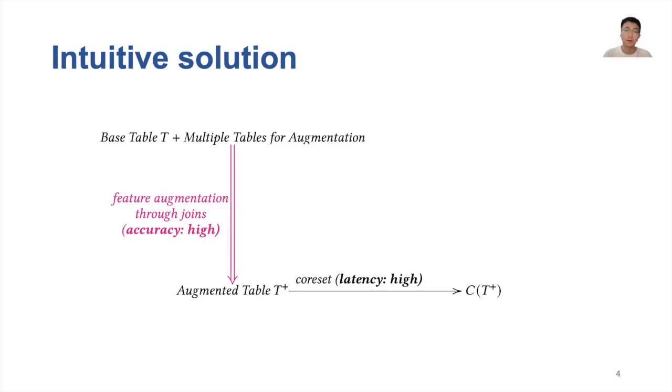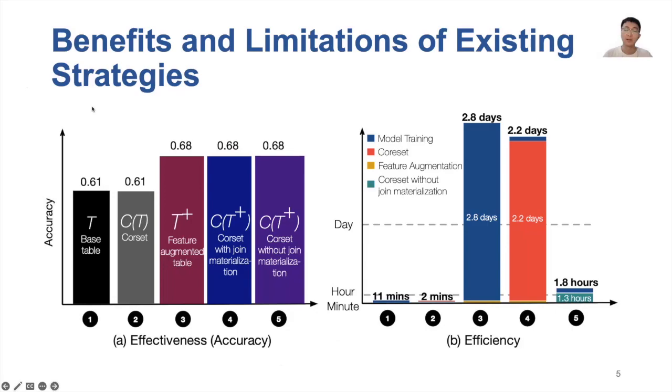In order to achieve both feature-rich and data-efficient machine learning, an intuitive solution is to first conduct feature augmentation through joins across multiple relational tables, followed by performing coreset selection over the trained data with enriched features. Before we discuss the problem we study in the paper, let's analyze the benefits and limitations of the aforementioned strategies using real experiments.